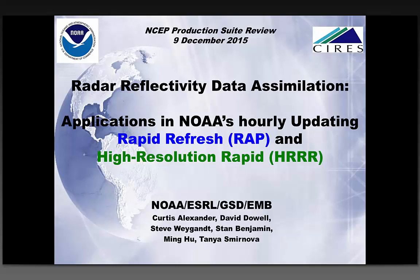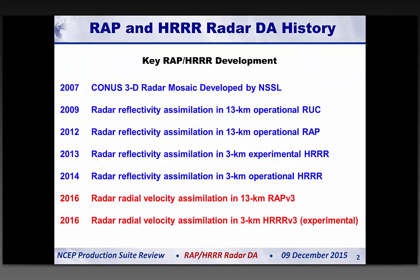I'm going to talk briefly about radar data assimilation applications, specifically with radar reflectivity data, focusing on the hourly-updating Rapid Refresh and High Resolution Rapid Refresh. A bit of history: data assimilation was enabled by this NSSL-derived national radar mosaic originally in 2007. We adopted use of the CONUS three-dimensional mosaic in 2009 with our RUC implementation, followed by a transition to the RAP in 2012, both at a 13-kilometer scale.